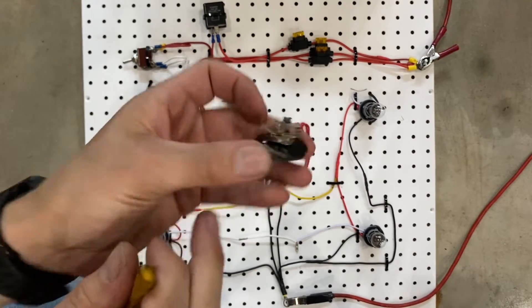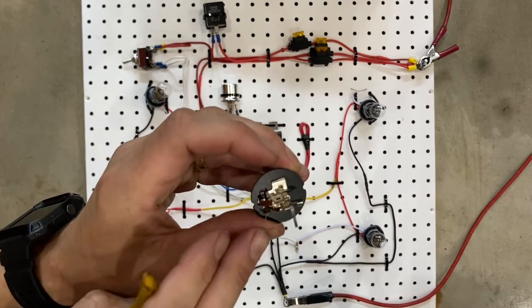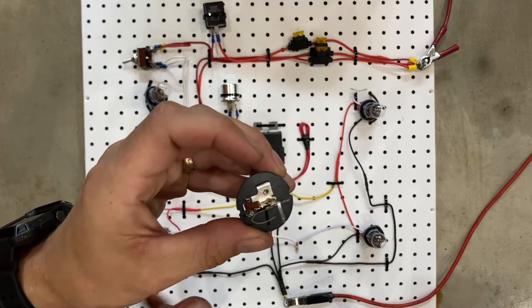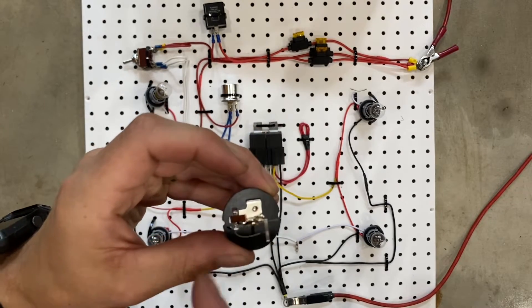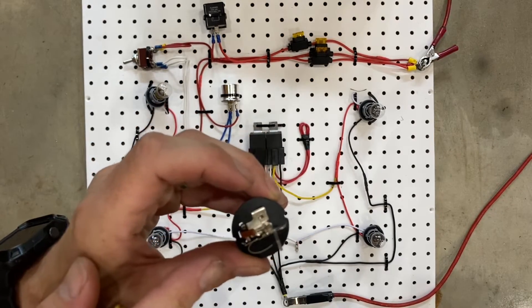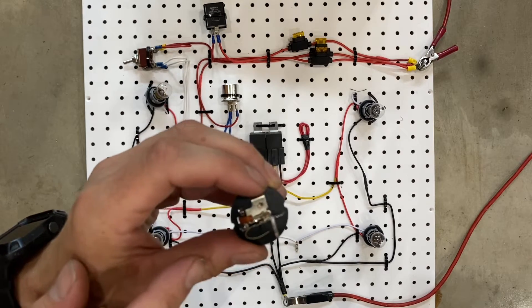There's two wires going in and there's a little tab on each side. As the electricity flows through the tab, it bends and makes a connection between the two tabs.